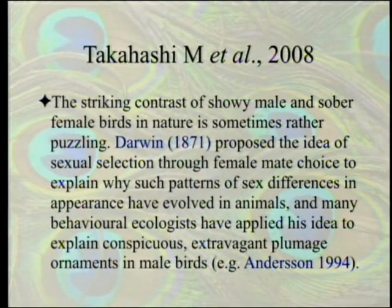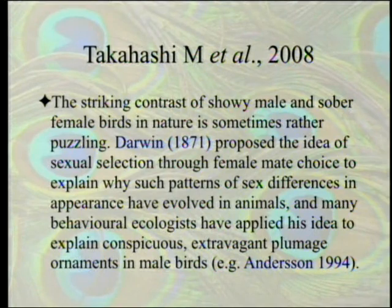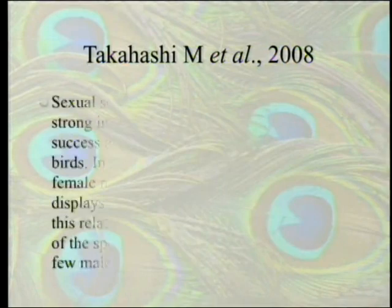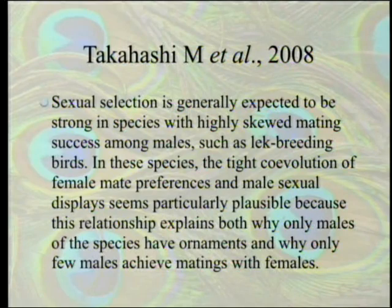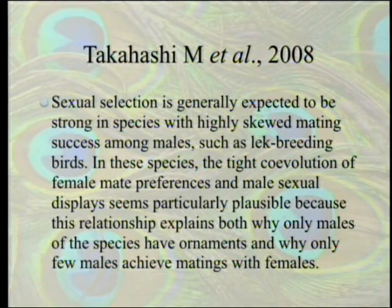The striking contrast of showy male and sober female birds in nature is the beginning of their paper. Darwin proposed the idea of sexual selection through female mate choice to explain why such patterns of sex differences in appearance have evolved in animals, and many behavioral ecologists have applied his idea to explain conspicuous extravagant plumage ornaments in male birds. Sexual selection is generally expected to be strong in species with highly skewed mating success among males, such as lek breeding birds.